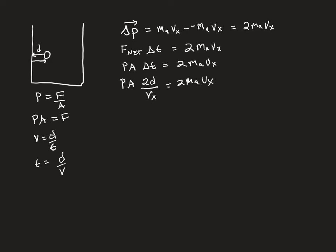Rearranging a little bit, we can cancel out the twos on both sides, and move the velocity in x up to make it velocity in x squared. Next, area times another dimension is going to turn into a volume. So we're starting to see signs of the ideal gas law — pressure times volume — and on the other side we have mass times velocity squared. We're starting to see the shape of where we're trying to go.